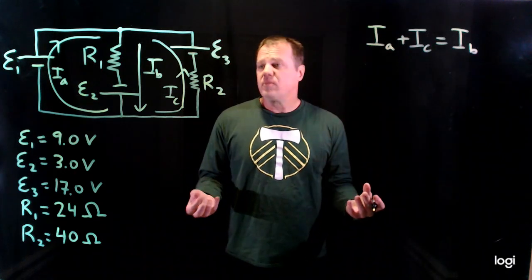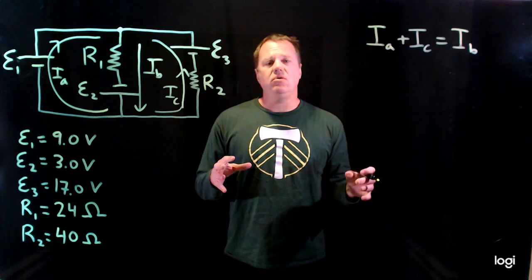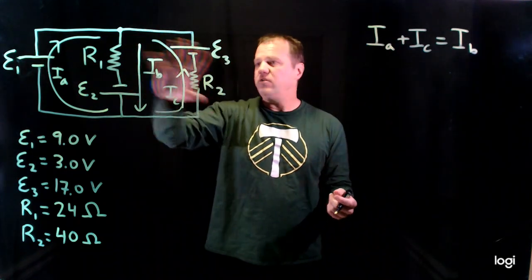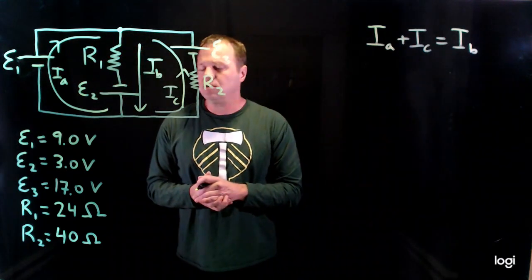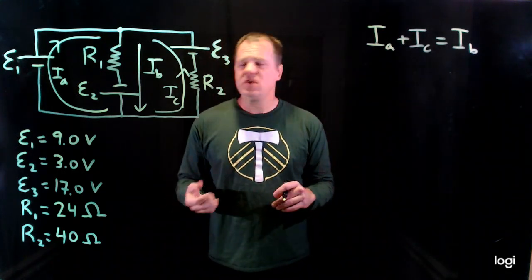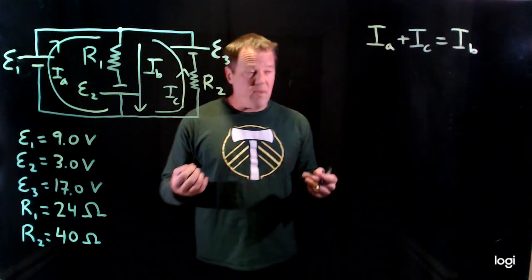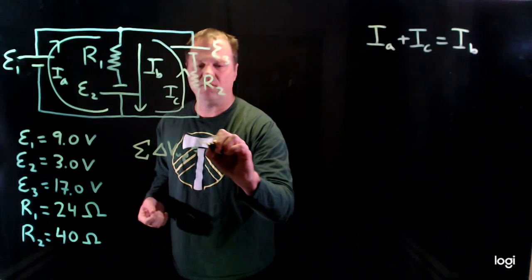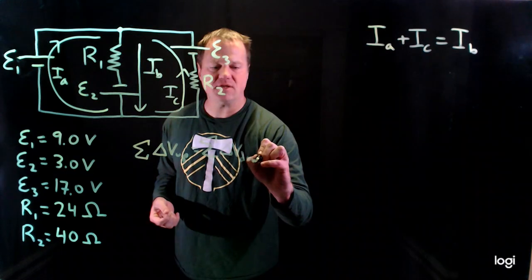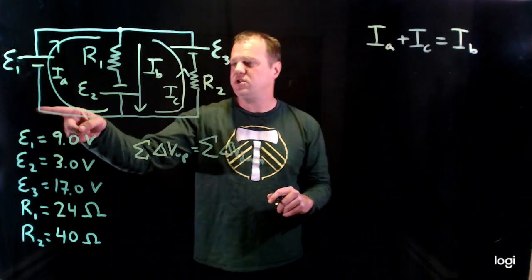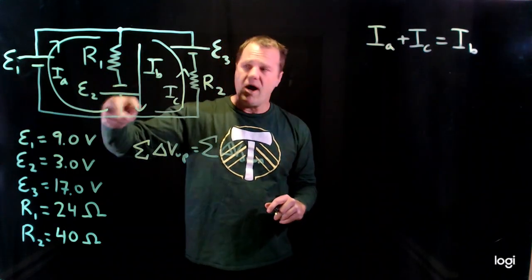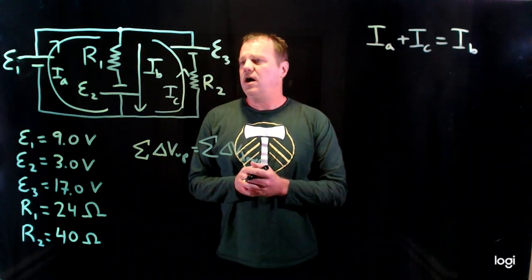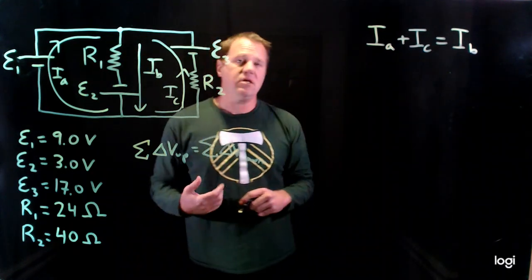Now we have to use Kirchhoff's voltage law. The idea is that you go around in loops and make as many loops as needed to cover all of the circuit elements at least once. There are different ways to write this, but the total voltage gains have to equal the total voltage losses. I'm going to start arbitrarily and go clockwise around the right-hand loop. You might try this yourself — pause the video and see if you get an equation that matches mine.